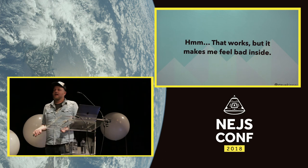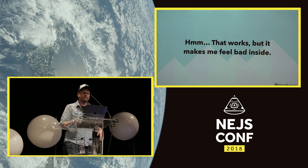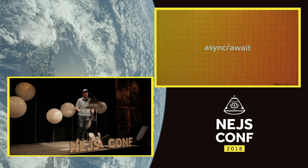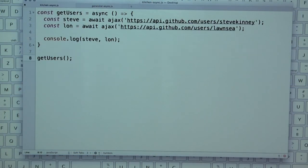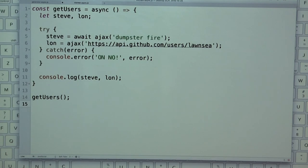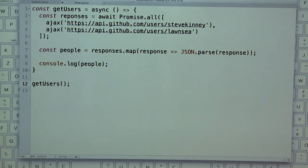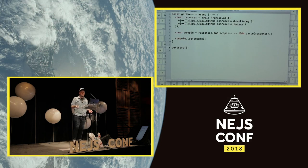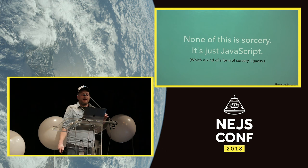If you take promises, mix them with generators, and throw in syntactic sugar so you don't see any of that code — you get async/await. That's all async/await is: promises and generators with a curtain over the darkness. You mark a function as async, replace those yields with await, and all that sadness is gone. Error handling uses try/catch from the language. You can also use Promise.all inside an async function and await it, because it's all promises and generators under the hood.